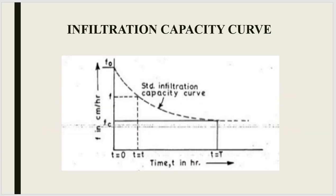The infiltration capacity curve for a given soil formation graphically represents the variation of infiltration capacity with time, where time is on the x-axis. During or after a rainfall, the infiltration rate can be tracked over time. The infiltration rate is at its maximum at the beginning of rainfall and thereafter gradually decreases. At any given time t, the corresponding infiltration rate f can be read from the curve.